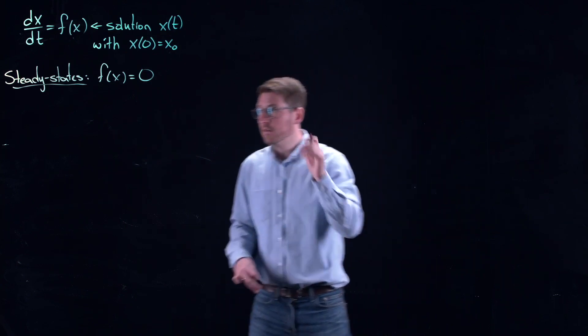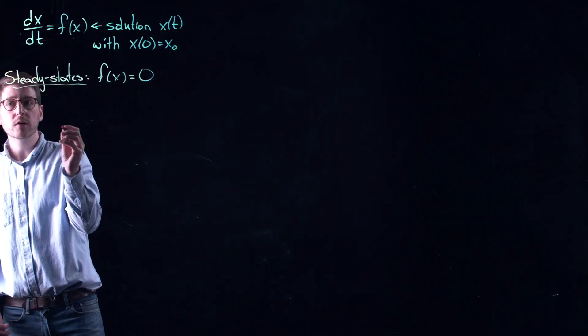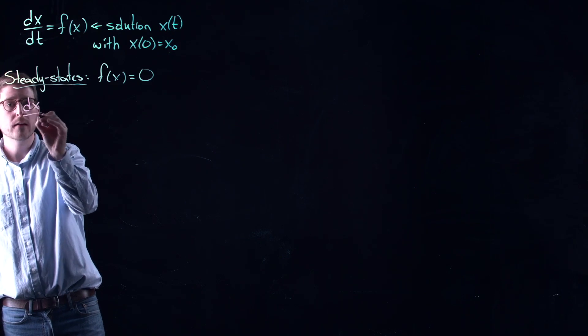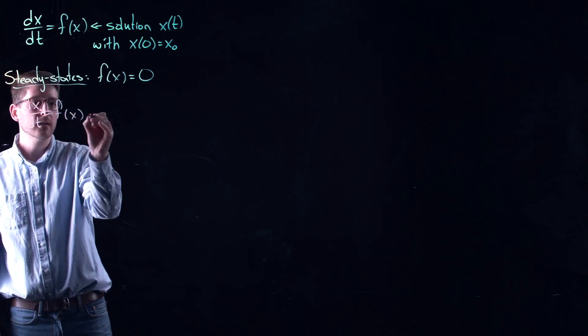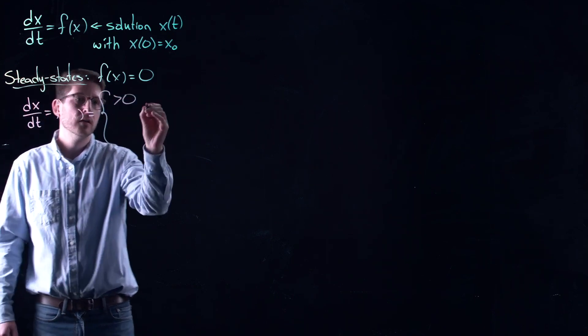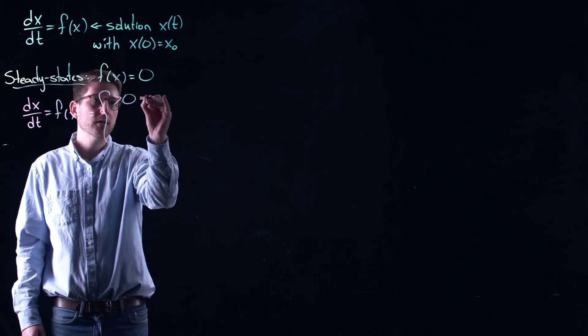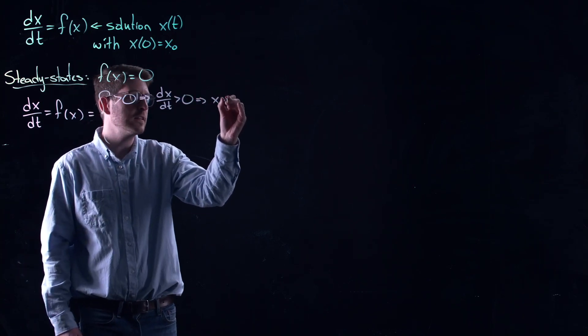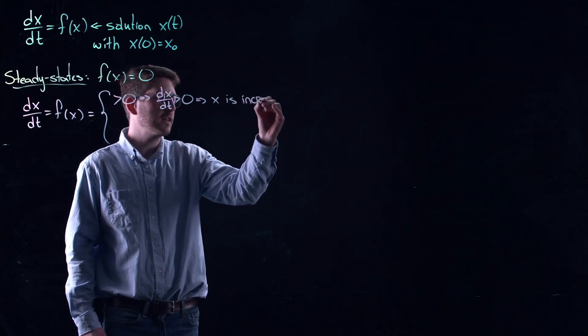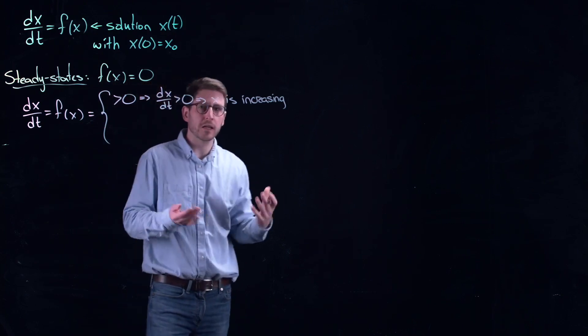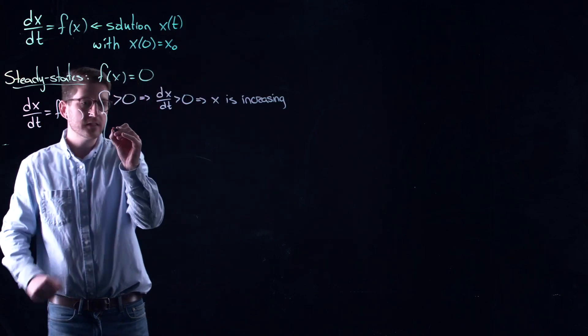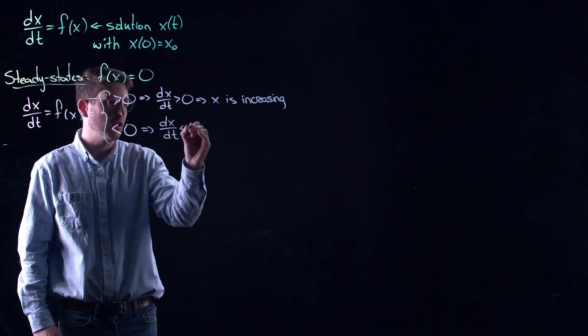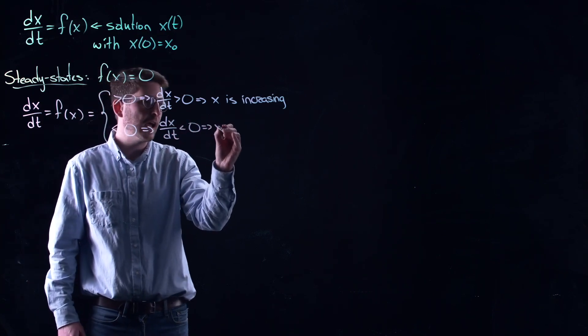But we can go further than steady states. In fact what we could do is we could find movement of the particle as well. For example we know that the derivative if it's equal to f of x, if this thing is positive, this implies that dx of t is positive, which implies x is increasing. This is our understanding of a derivative that we learn in a basic calculus class. Same thing, if this thing is negative, this would tell me that my derivative is decreasing, or sorry, my derivative is negative, which tells me x is decreasing.